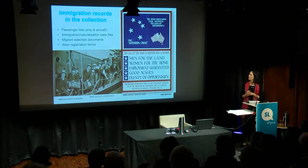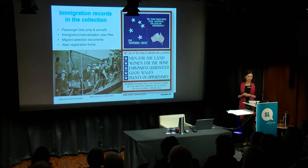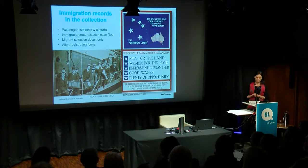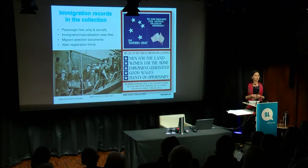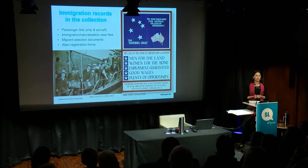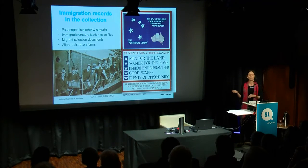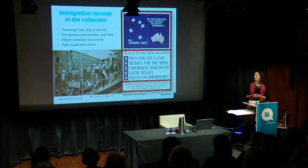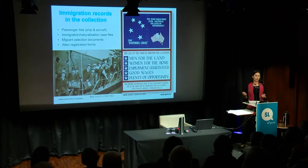On screen here you will see a list of the main types of immigration records held in the National Archives collection. The National Archives is responsible for the storage and public access of records created by the Australian Commonwealth Government. Only records of permanent value are kept, and this includes records of immigration, which make up a very large proportion of our collection. According to the law, the public have a right to access our records once they're over 20 years old.